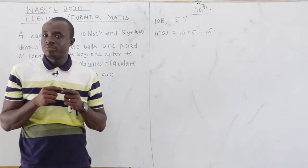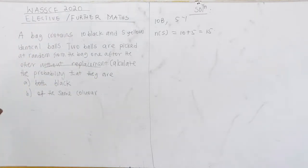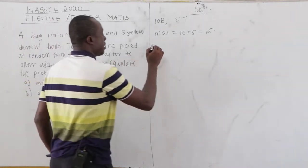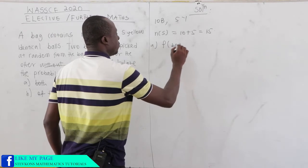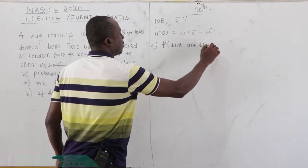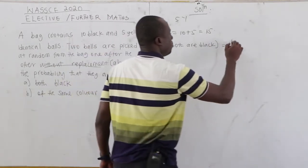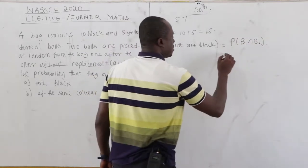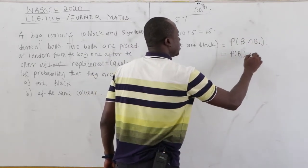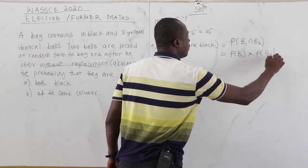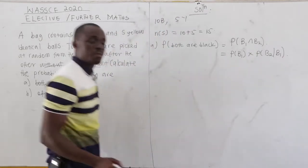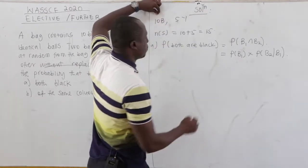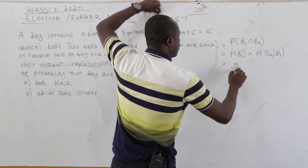We know that probability is number of events over number of sample space. We want to find the probability that they are both black. So P(both black) = P(B1 ∩ B2), which is the same as P(B1) times P(B2 | B1) — the probability of picking B2 given that the first one is black.